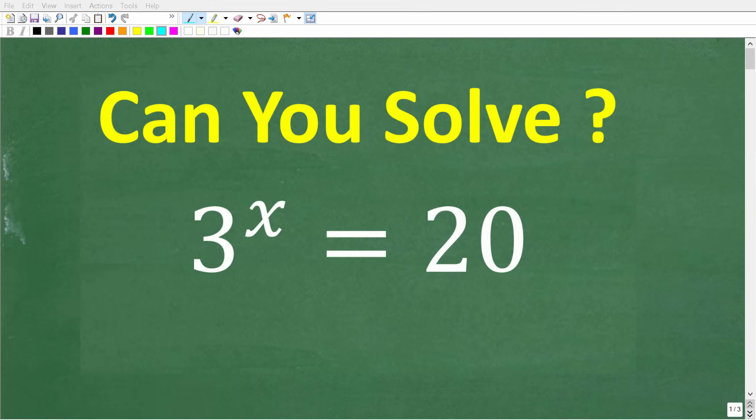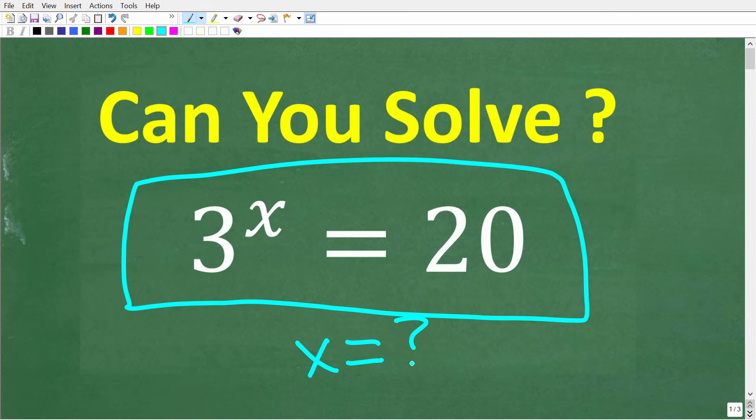Okay, so if you've only studied basic algebra, you may not know exactly what to do to solve this equation, but you still should be able to get pretty close by using some other methods. So we have 3 to the x power is equal to 20, and we're trying to solve this equation for x.